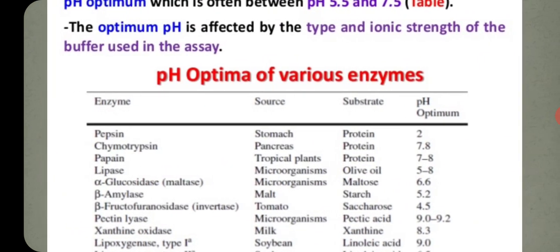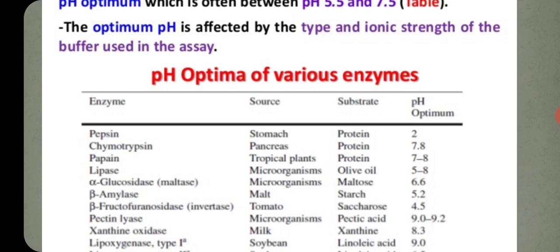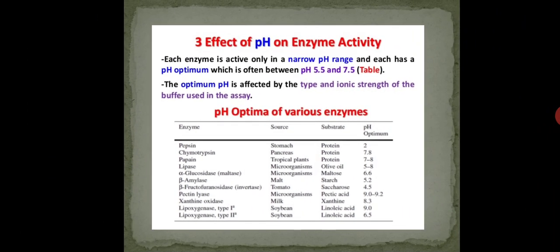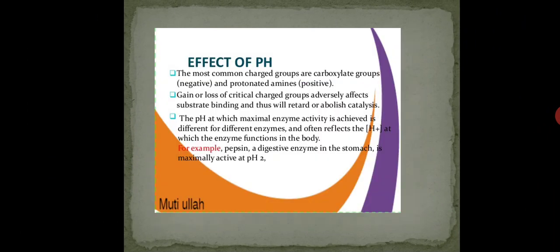That is the effect of pH. Here you can see different enzyme, source, substrate and the optimum pH. If we will talk about the pepsin, which is present in the stomach, the source is the stomach and its substrate is protein. When we consume protein, we get pepsin in the stomach. And what is the optimum pH? At the pH range of 2. Then chymotrypsin is there. The source is pancreas, substrate is protein. It shows the optimum pH activity at 7.8. So like this, different types of enzymes are there with the source and substrate plus showing its optimum pH activity.